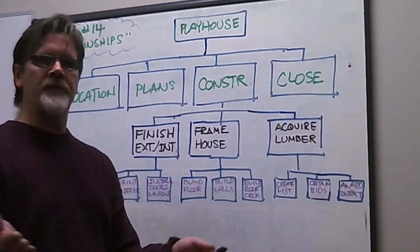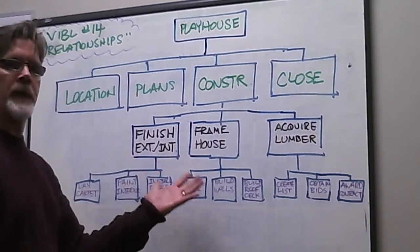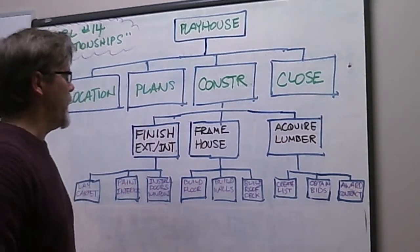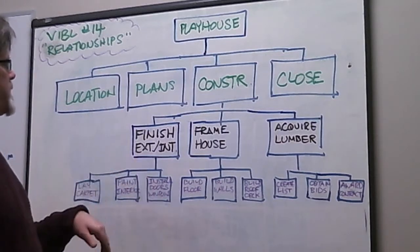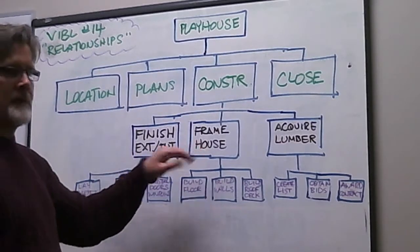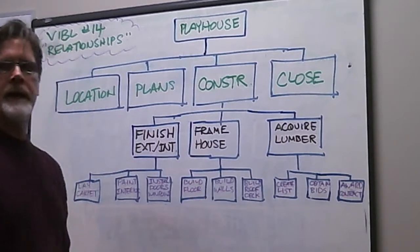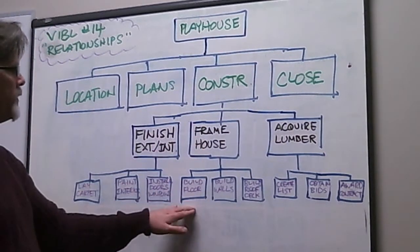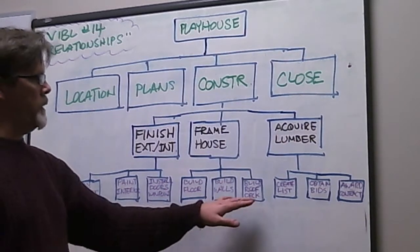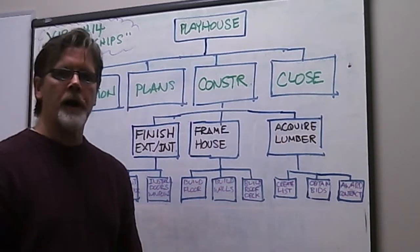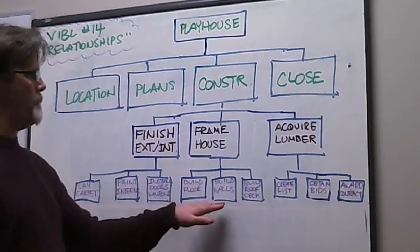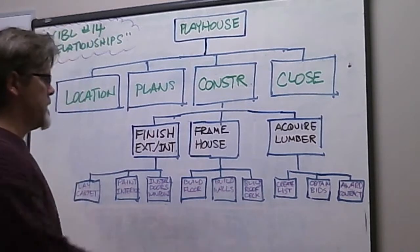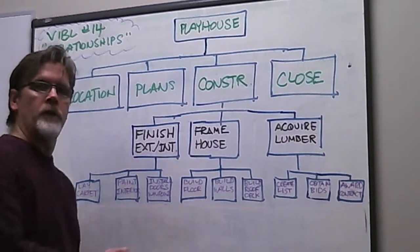What's an example of a finish-to-start relationship with the playhouse? As we focus on the summary task of constructing the playhouse, we have work packages of exterior finish, interior finish, framing of the house, and acquiring lumber. Looking at the framing work package, we have activities: build floor, build walls, and build roof deck. Hard logic tells us we can't build or frame the walls on top of the floor until we've actually built the floor.